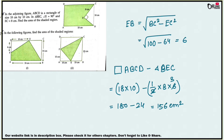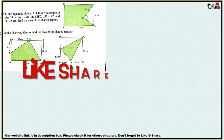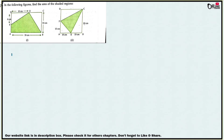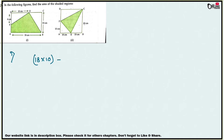If you like this video, please share it and subscribe to my channel. Now the last one, sum number 11. Find the area of the shaded region. First find the area of the rectangle, then subtract the areas of the triangles. Area of rectangle equals 18 times 10.